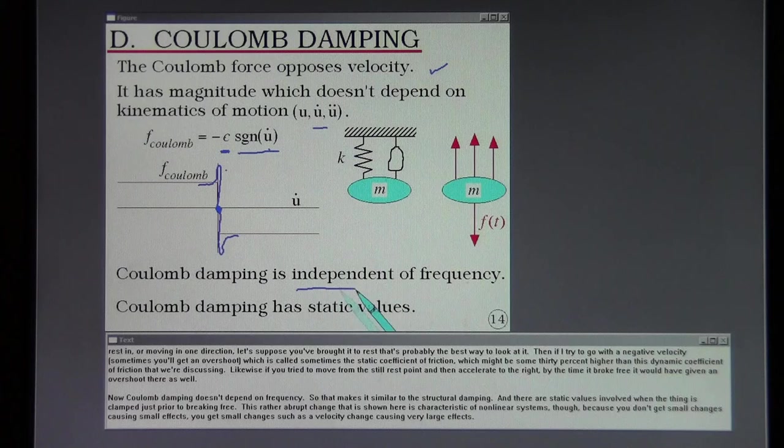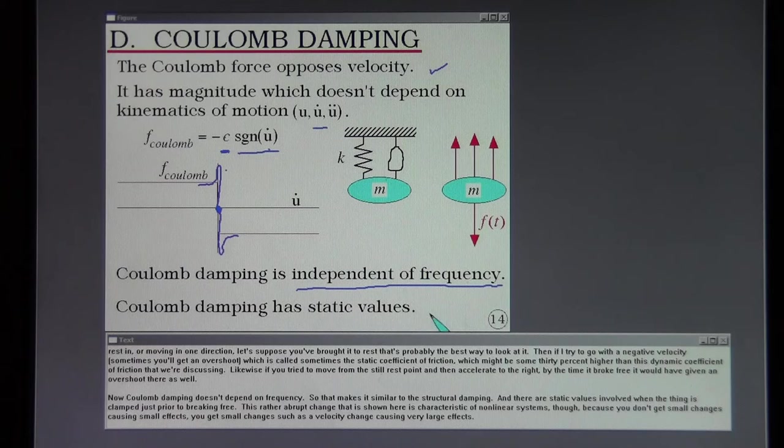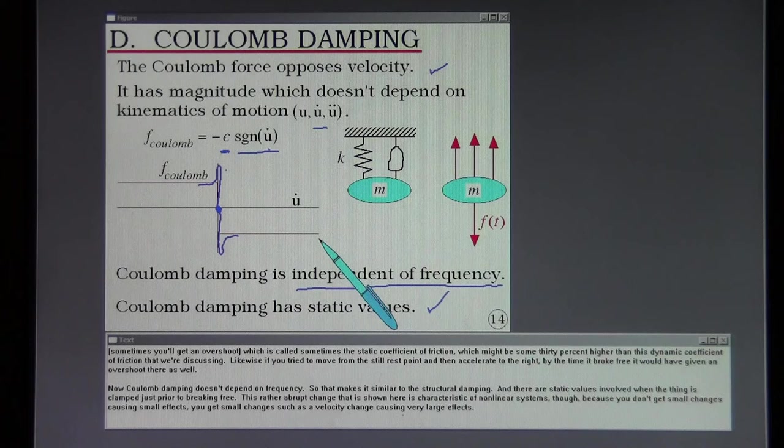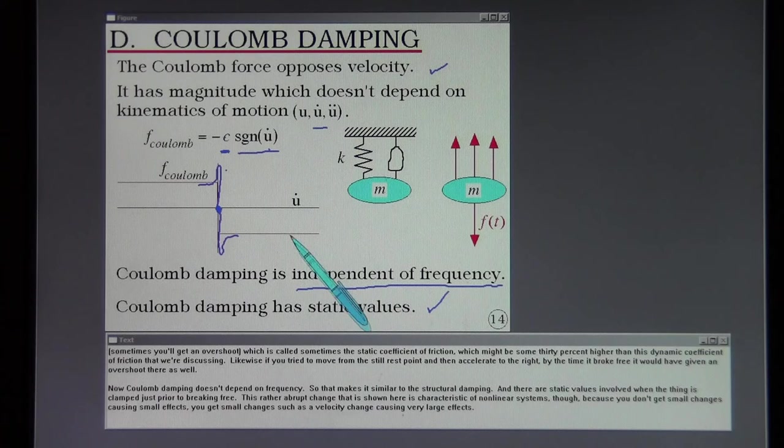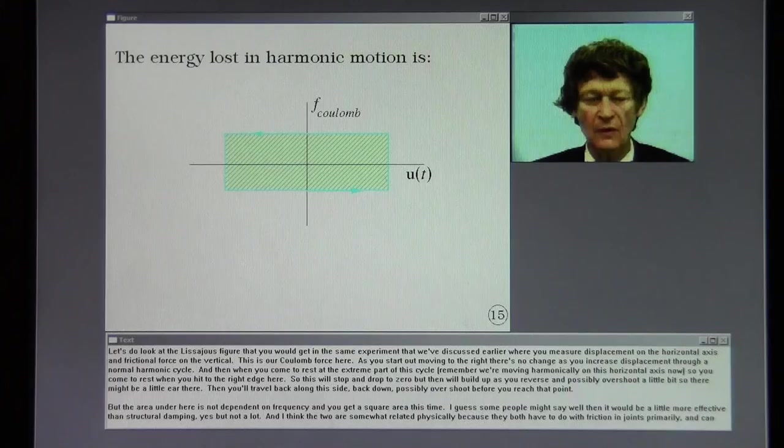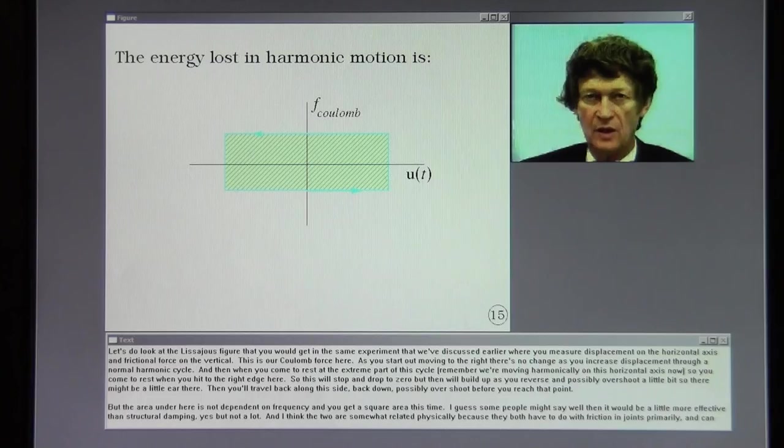Now Coulomb damping doesn't depend on frequency so that makes it similar to the structural damping and there are static values involved when the thing is clamped just prior to breaking free. This rather abrupt change that is shown here is characteristic of non-linear systems though because you don't get small changes causing small effects. You get small changes such as a velocity change causing very large effects.